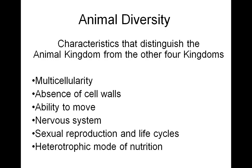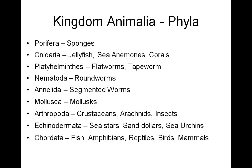Now that we have laid down the characteristics of what an animal is, let's look at a list of the nine major animal phyla. Here we see the first animal being sponges in phylum Porifera. Next, Cnidaria — examples of animals in phylum Cnidaria would be jellyfish, sea anemones, and sea corals.